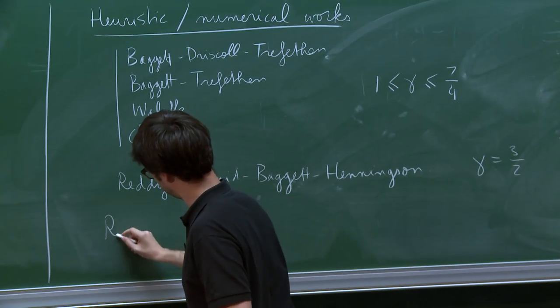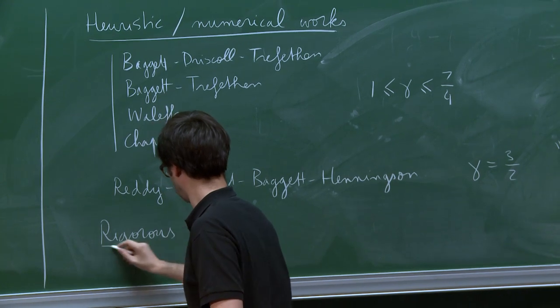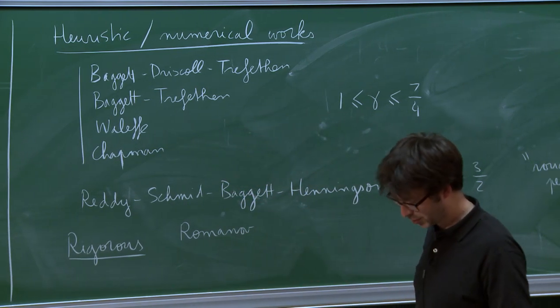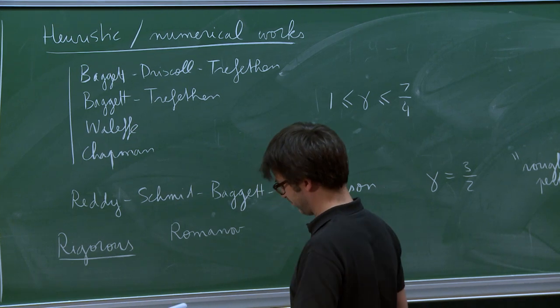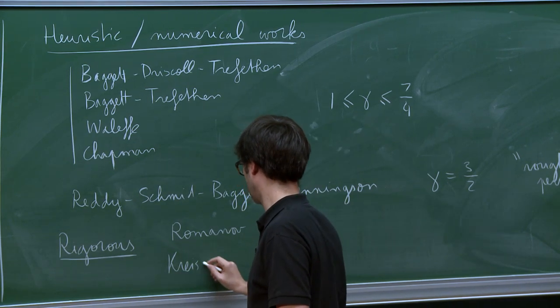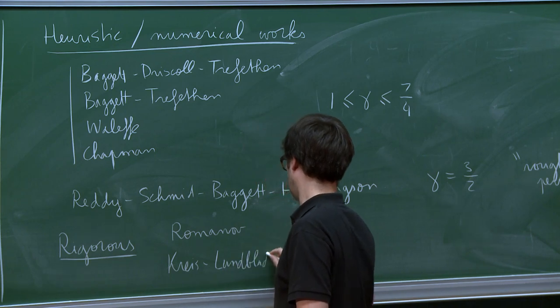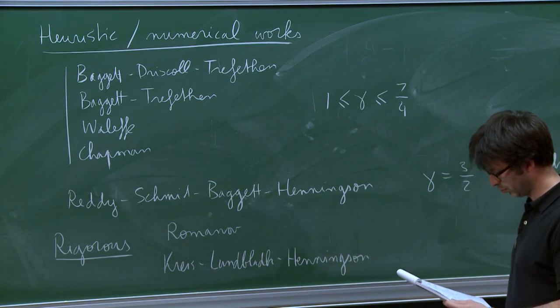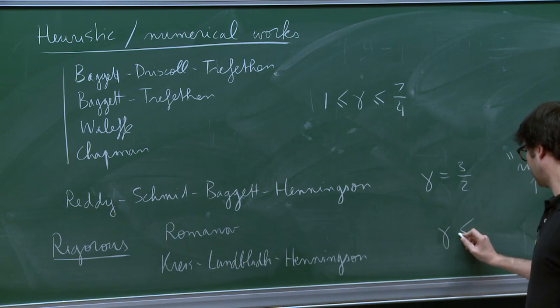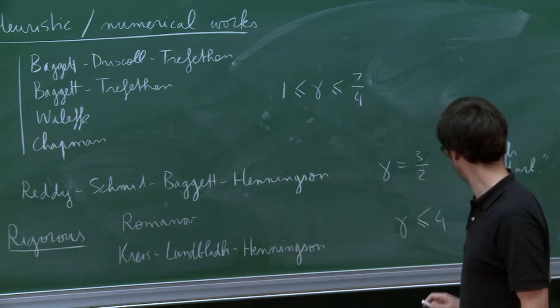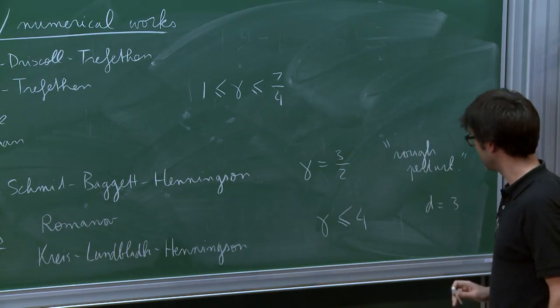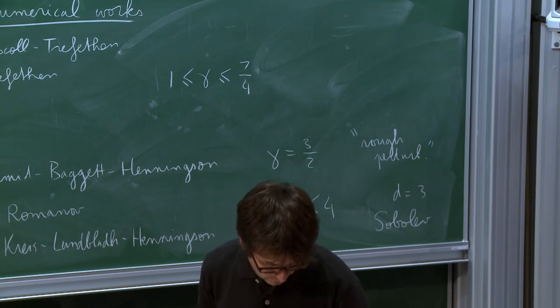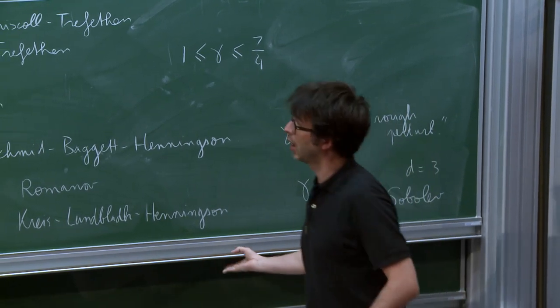Okay, and there is also rigorous results. So it started with Romanov, who looked at the case of a channel rather than the whole space. And then there is Kreiss, Lundblad, Henningson. Okay, and once again, there is many references. I don't cite everybody. But the world record was gamma less or equal than four by rigorous means in dimension three. So everything is in dimension three. And in Sobolev topology. Okay, so that was the state of the art.